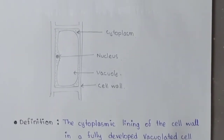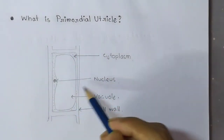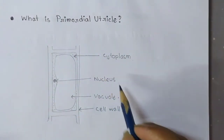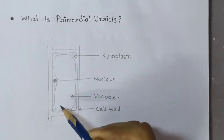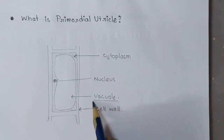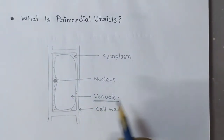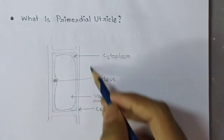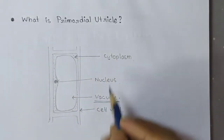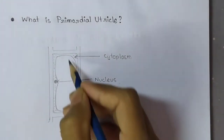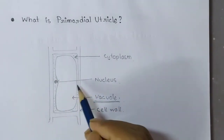Now let's move to the parts of primordial utricle. This is a drawing of primordial utricle. In this cell, the main thing is the vacuole. The vacuole is very big in size. This is a fully developed plant cell, and the vacuole is totally developed — it's very big and occupying most of the place in the plant cell.